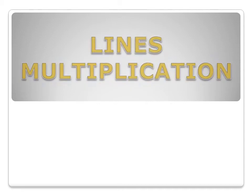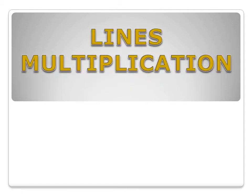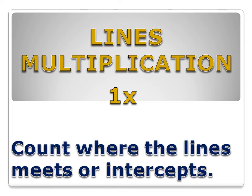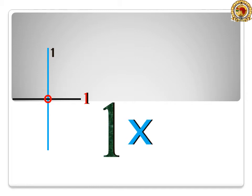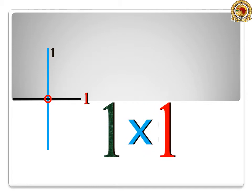Lines Multiplication. 1 times. Count where the lines meet or intercept. 1 times 1 is equal to 1.